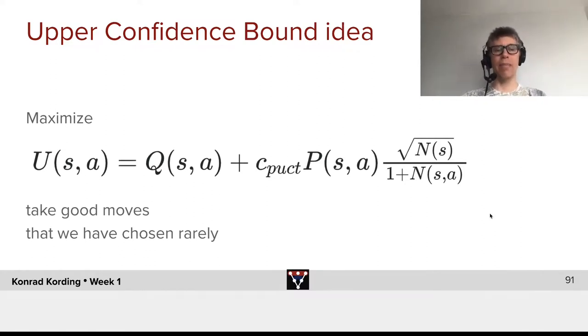What we want to do is we want to maximize U of s and a, which is the sum of the quality of the moves that we experienced so far, Q of s and a, plus a parameter c_puct.